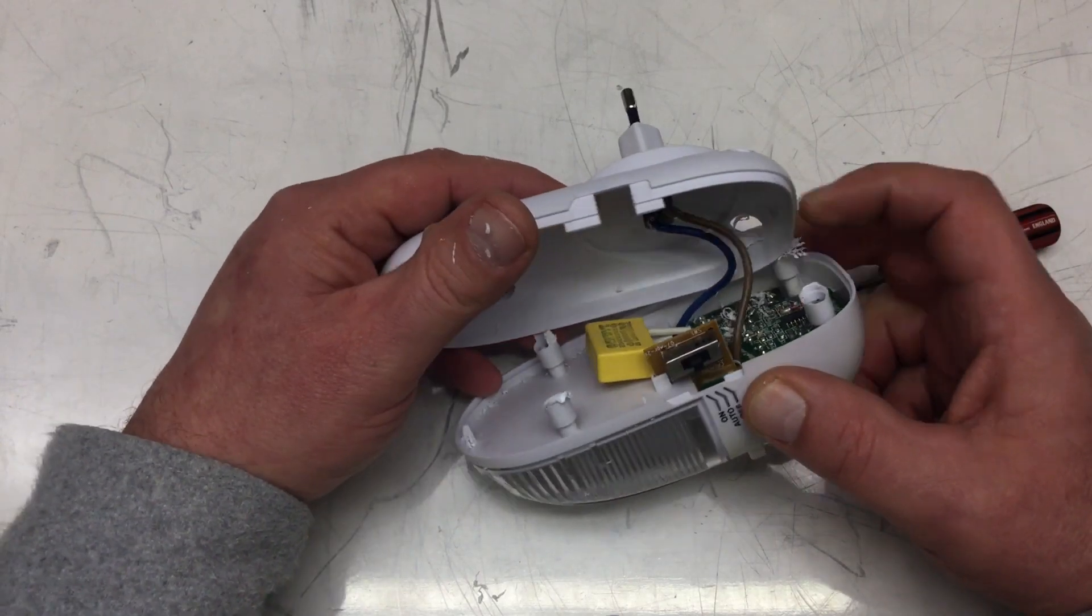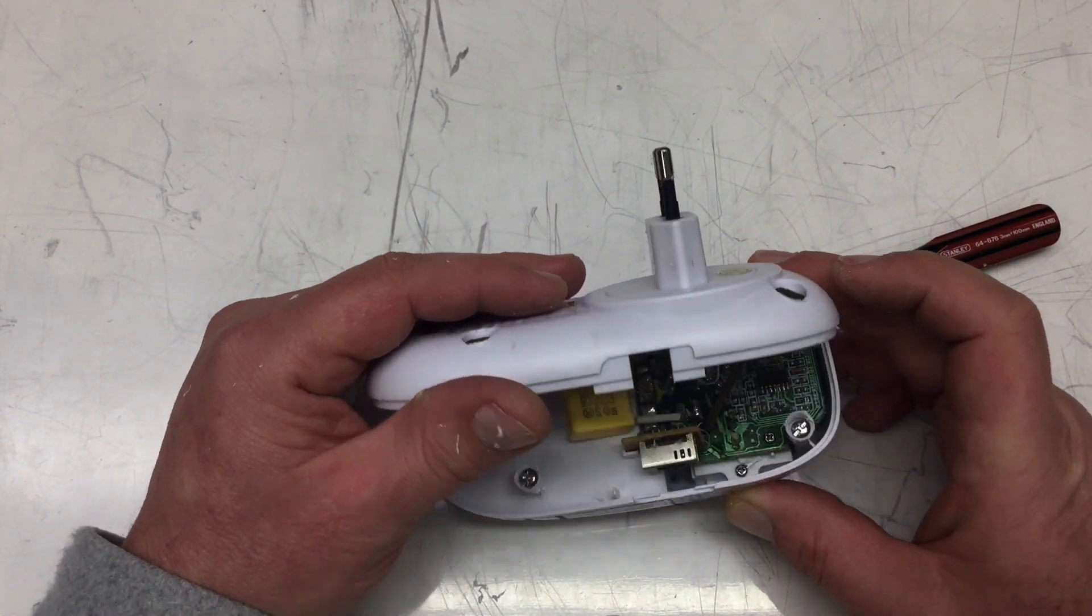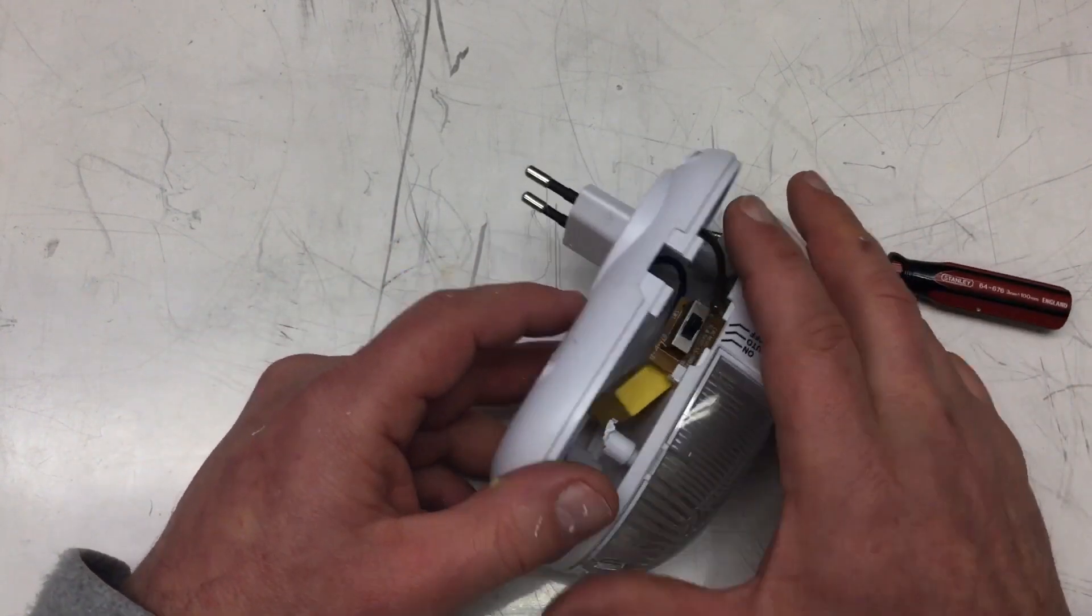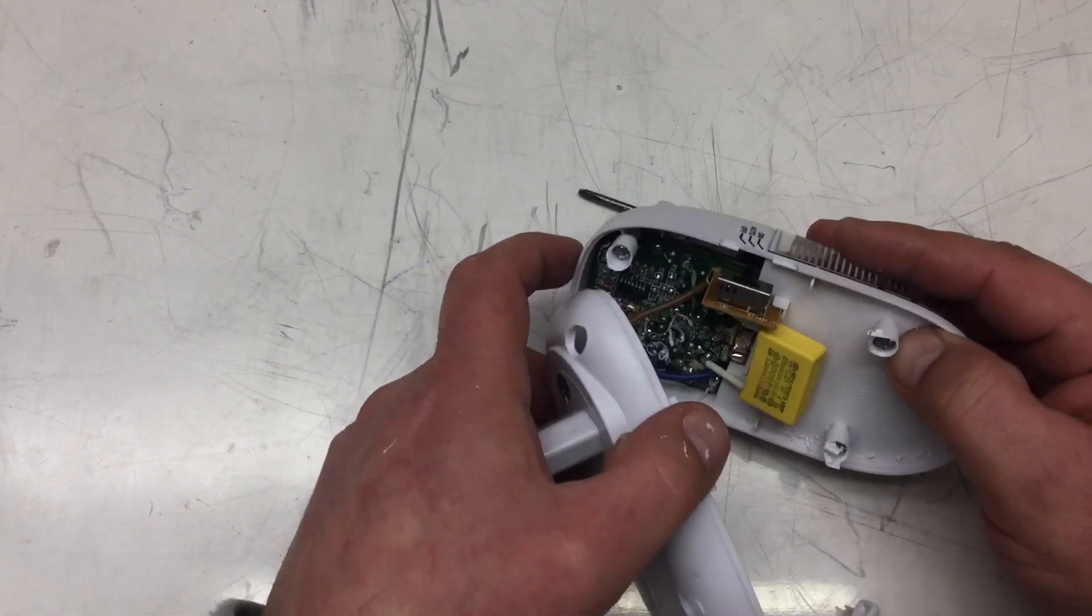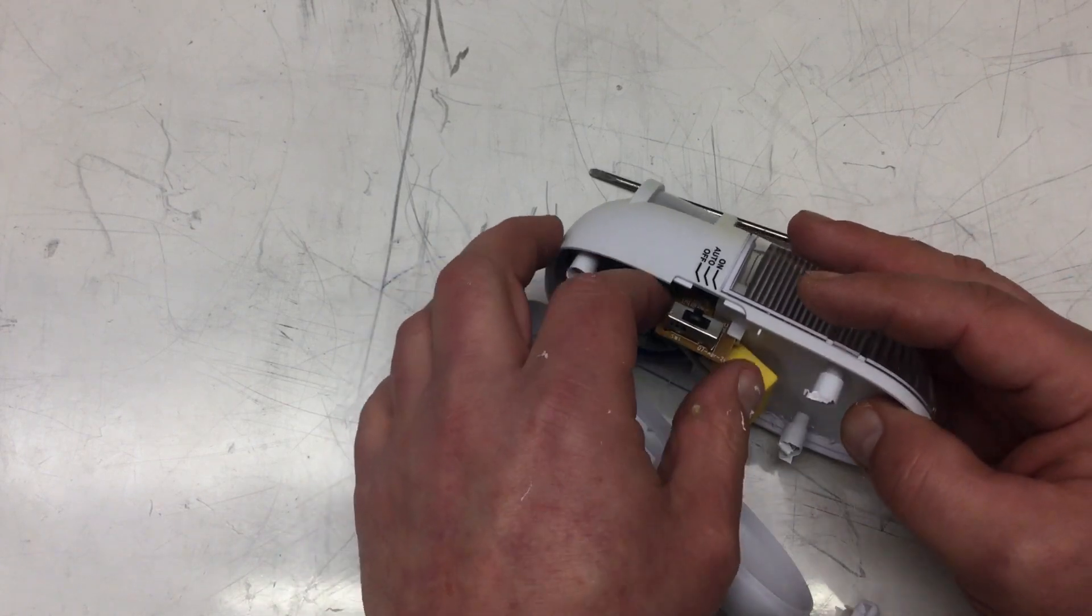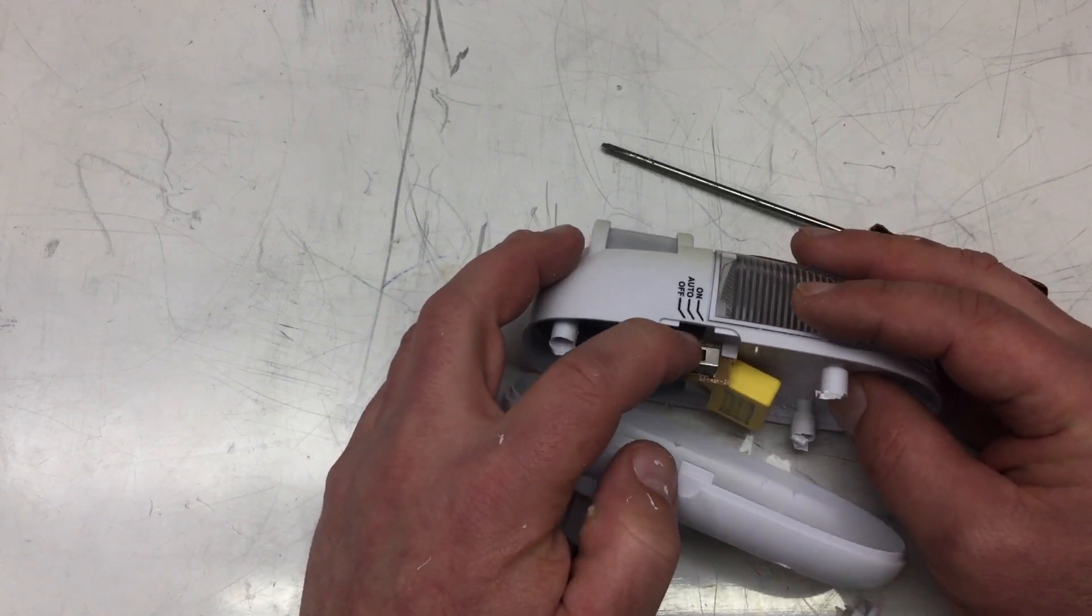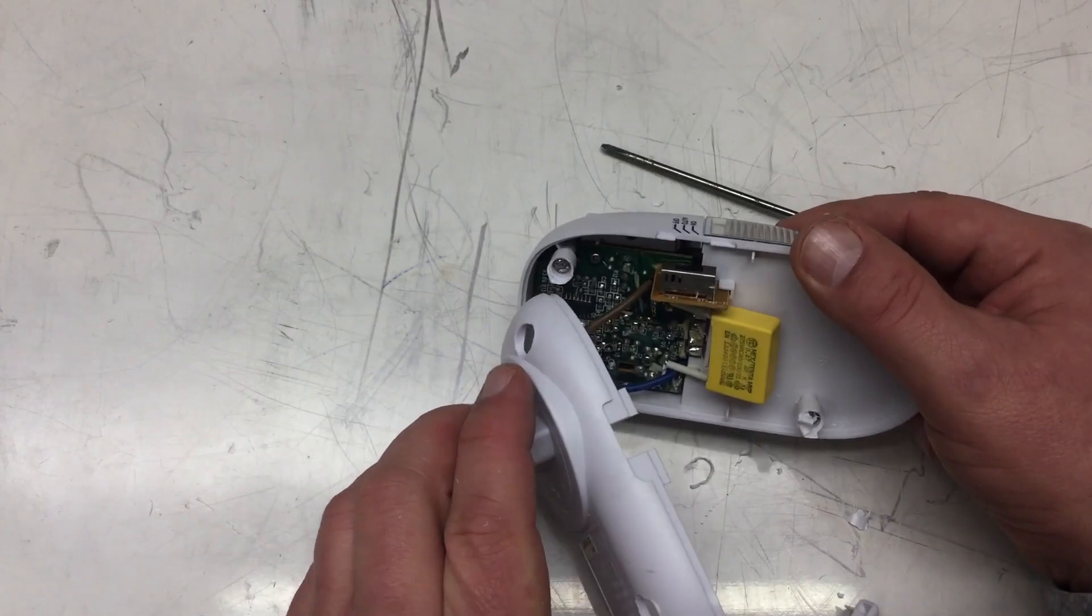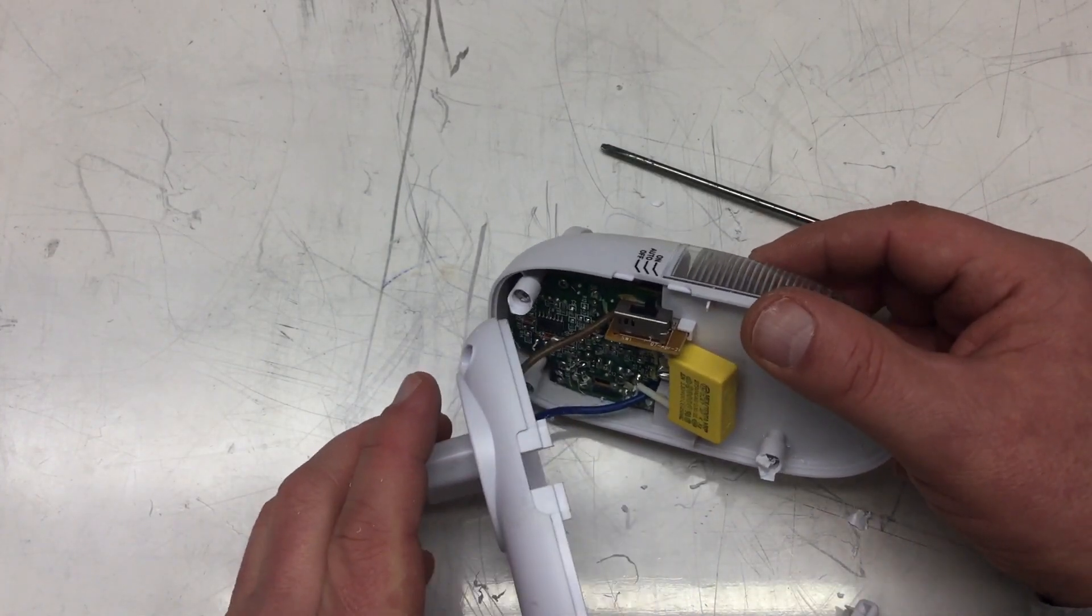So here we have our mains AC connection. Oh, I see a board and it's full of stuff. Let's get that board out. No security screws there. There's a little daughter board with a switch that's actually soldered on. And a few little screws. But that shouldn't be a problem.